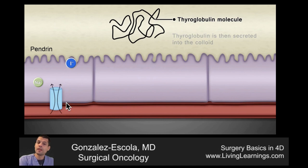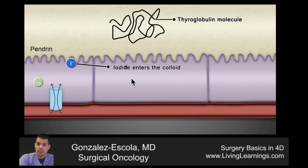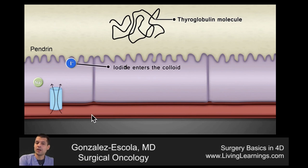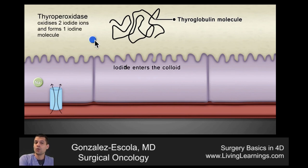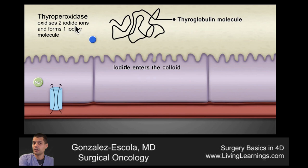On the basolateral side, iodide ion — and you can remember that the iodide is obtained in the diet because of the D — comes from the diet and gets into the follicular cell. It then gets secreted through a co-transporter named Pendrin. Once in the colloid, two of these ions are joined together to form one iodine molecule. The iodine with an N is the molecule we'll be talking about from now on, while iodide with a D is what you obtain from the diet. This reaction is enhanced by thyroperoxidase.